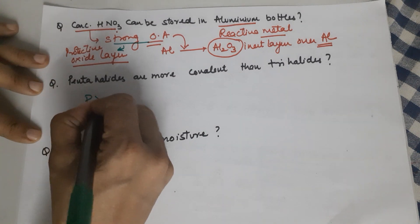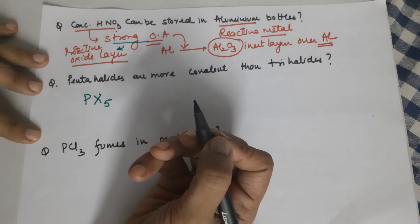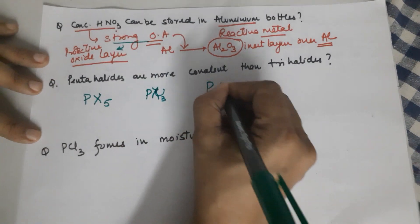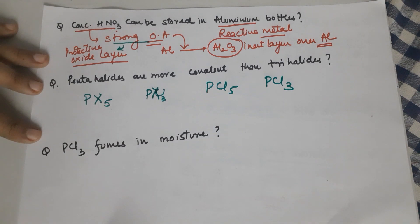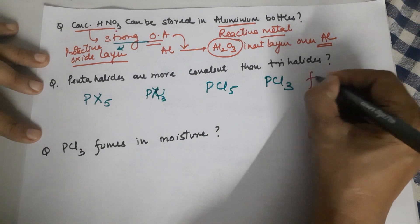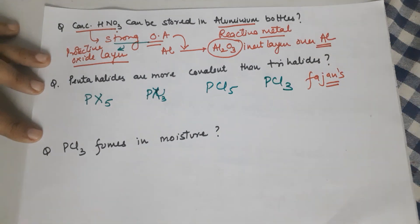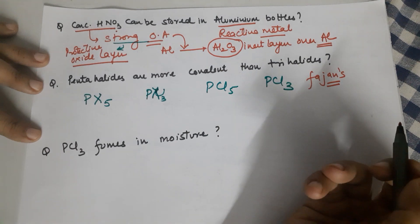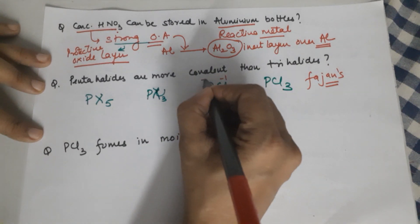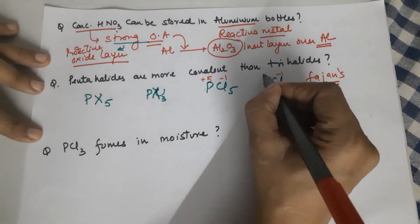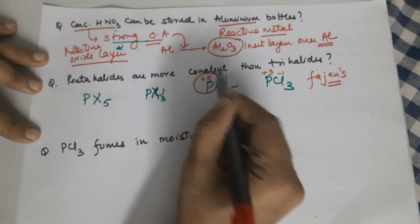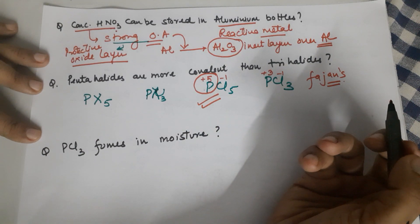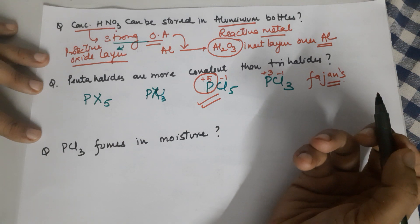Next: pentahalides PX₅ — NX₅ will not be formed because of the absence of d orbitals. Comparing PCl₅ and PCl₃, which is more covalent? If you are not aware of Fajan's rules, please watch the video already on the channel. According to Fajan's rules, higher positive oxidation state gives more covalent character. In PCl₅, phosphorus has +5; in PCl₃, phosphorus has +3. Since covalent character is directly proportional to the positive oxidation state of the electropositive element, PCl₅ is more covalent.